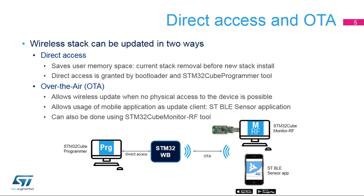The STM32Cube Programmer Tool can be used to directly access the bootloader and its dedicated commands. The second way for updating the wireless stack is to do it over-the-air, or OTA. This requires the use of the current wireless stack for downloading the new one, meaning an extra flash memory area must be available. The OTA application example is available in the STM32Cube Firmware Package. New firmware can be downloaded using the STBLE Sensor Mobile Application or the STM32Cube Monitor RF Tool and a BLE dongle.